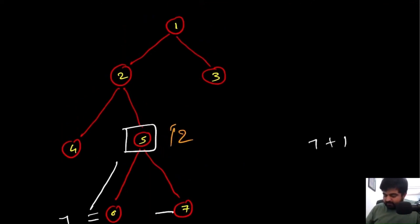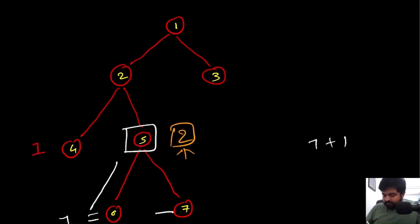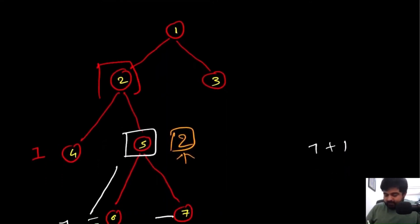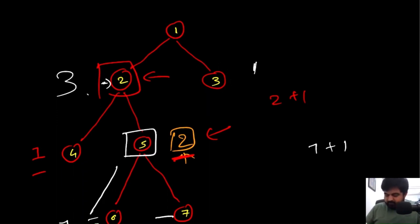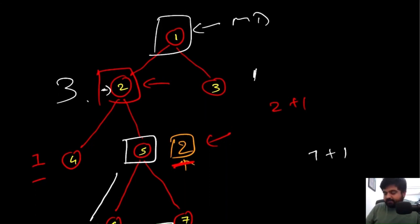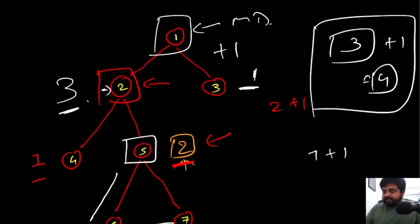Node 4 does not have any children, so its maximum depth is 1. Now with these two values — 2 and 1 — it's easy to find the maximum depth at node 2. We take the maximum of these two, which is 2, and do 2 plus 1, giving 3. Node 3 has no children so its depth is 1. We then take the maximum of 3 and 1 at the root, do 3 plus 1, and get 4, which is the correct answer.